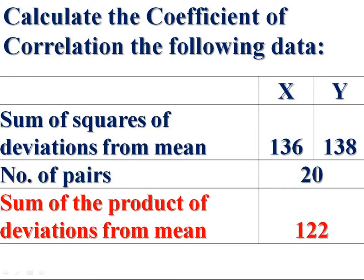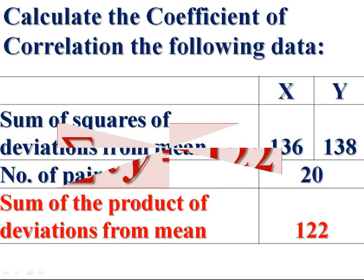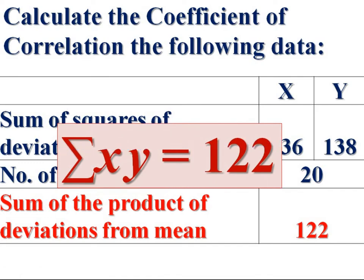Sum of the product of deviations from mean: the deviations x and y are multiplied together. Taking the sum gives us sigma xy. Sigma xy equals 122.